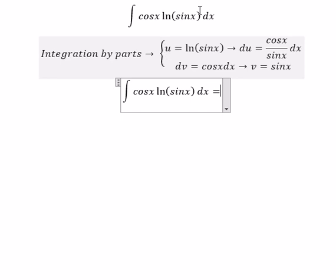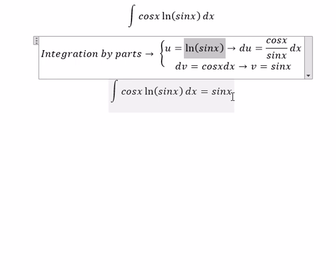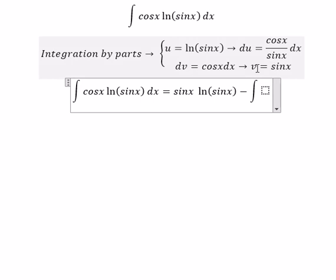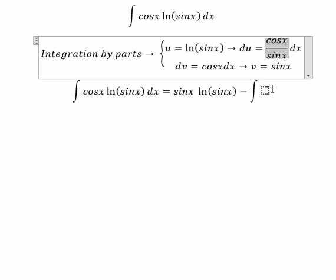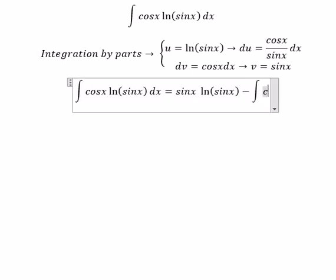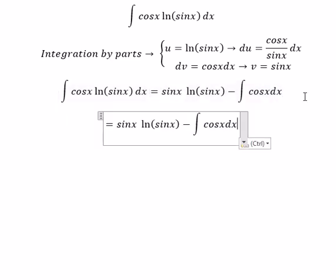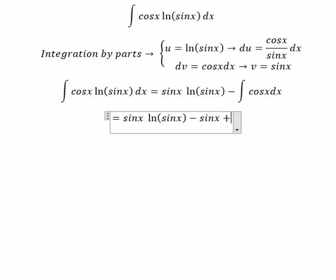So we have u multiplied with v, and we have the negative v multiplied with du. So sine x multiplied with this one - we simplify, sine x cancels, so we have cosine x dx. The integral of cosine x is sine x, and we have C.